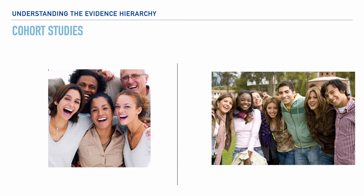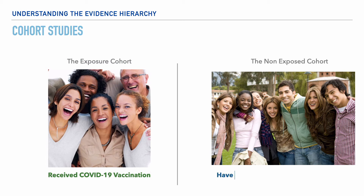For example, with a cohort study, we could study two groups — one group of individuals who have received the COVID-19 vaccination and another group that has not received the vaccination. As a cohort study, we would want to see how well these groups of patients fare in terms of possible future exposure to the coronavirus.